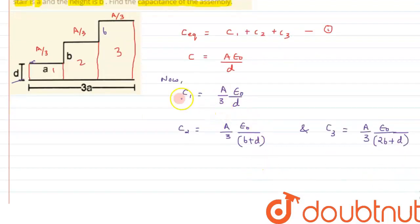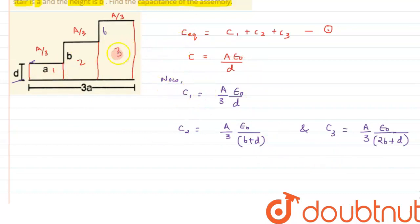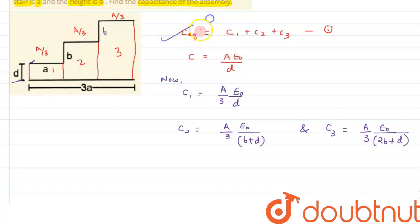The separation for each capacitor is constant: for C3 it is 2b + d, for C2 it is b + d, and for C1 it is d. We should remember: whenever the separation is divided, the capacitors come into series; and whenever the area gets divided, the capacitors come into parallel. Here the area is divided, so we apply the parallel combination formula.